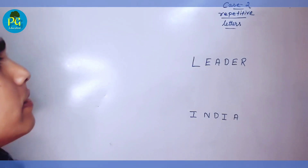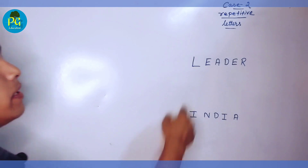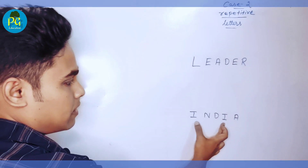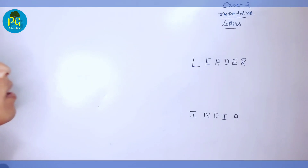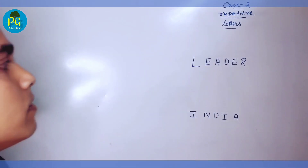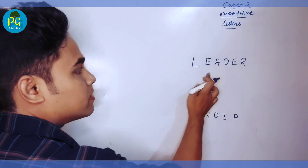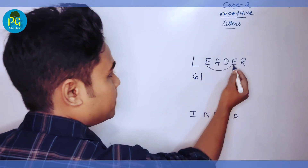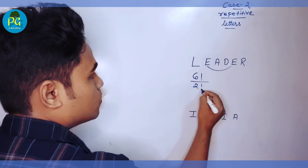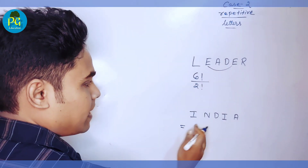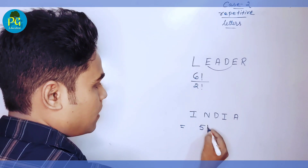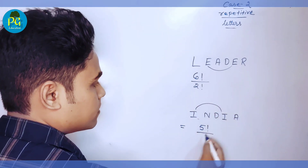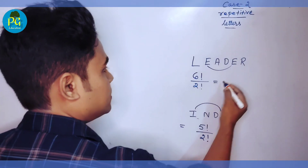Let us discuss case 2 where the letters are repetitive. Here in the word LEADER, E is repeated. In the word INDIA, the letter I is repeated. So how many ways can we arrange the letters of the word LEADER? First, you count there are 6 letters, so it is 6 factorial. Now you see E is repeated twice, so divide by factorial 2.